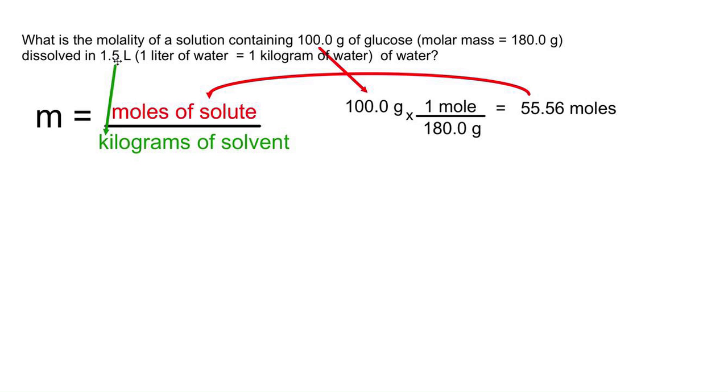Now the problem gives it to us in liters, but due to the density of water, remember 1 gram is equivalent to 1 milliliter, so therefore 1 kilogram is equivalent to 1 liter. Since we know the density of water, we know this conversion, we could just say 1.5 liters is also 1.5 kilograms.